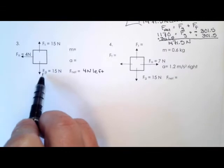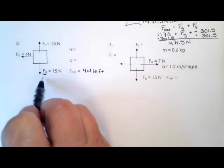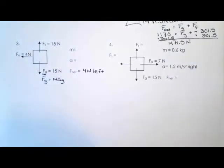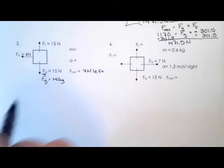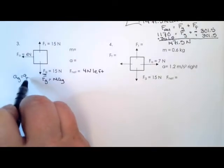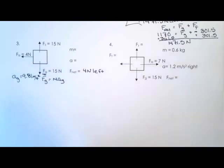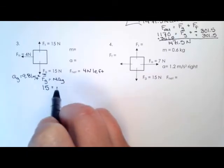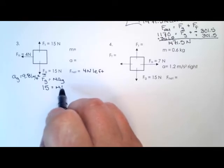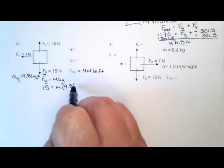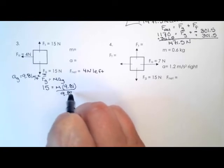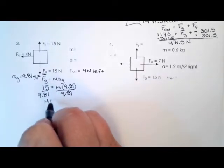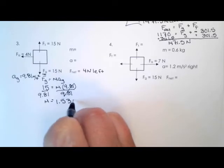And the thing that we're going to use to figure out the mass is this force due to gravity, because we know F_g is mass times the acceleration due to gravity. And we know that the acceleration due to gravity is always 9.81 meters per second squared. So we know 15 equals the mass, which is what we're looking for, times 9.81. We're going to divide both sides by 9.81, so that ends up being mass equals 1.53 kilograms.